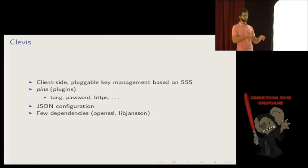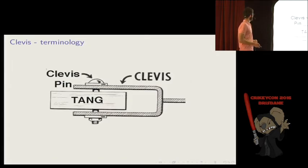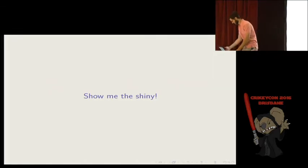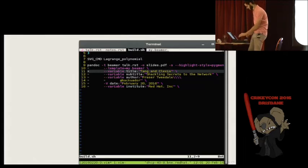So Clevis is a client-side pluggable key management system based on Shamir secret sharing. The plug-ins are called pins, and we have plug-ins currently for Tang, password, and HTTPS. It's just where you put the secret to an HTTP server, HTTPS. And then when the acquisition phase occurs, we just do a get to get that secret back. It has JSON configuration and very few dependencies. So OpenSSL and LibJansen, and libcurl if you want to use the HTTPS pin. The terminology is based on a simple kind of shackle. We've got the Tang, which means tongue, and the Clevis kind of housing, and a pin goes through them, and that's it. That's how it's shackled. That's where the terminology comes from. So I think that's enough math. Demo time.